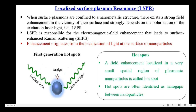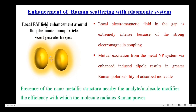When two nanoparticles are taken, hotspots are often identified as the nano gaps between nanoparticles, where the local electromagnetic field enhancement takes place in the nano gaps — this is called second generation hotspots. The local field enhancement in the gap is extremely intense because of the strong electromagnetic coupling. The eventual excitation from the metal nanoparticle system via an enhanced induced dipole results in greater Raman polarizability of the adsorbed molecule. Thus, the presence of the nanometallic structure nearby the analyte modifies the efficiency with which the molecule radiates Raman power — this is called enhancement of Raman scattering with the plasmonic system.